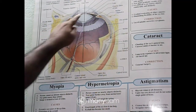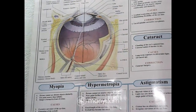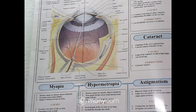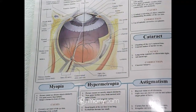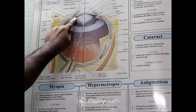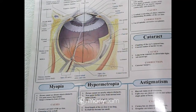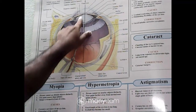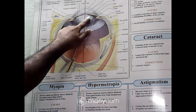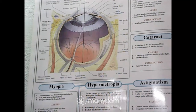Just behind the pupil there is the eye lens. It is made of a transparent and flexible substance. The eye lens is held in its position with the help of the ciliary muscle.